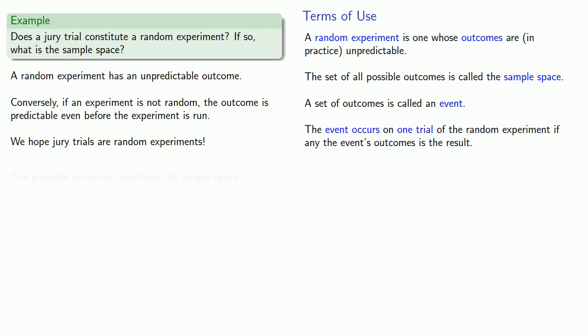And so the possible outcomes constitute the sample space. While this isn't a civics class, everyone should know that a jury trial has three possible outcomes.